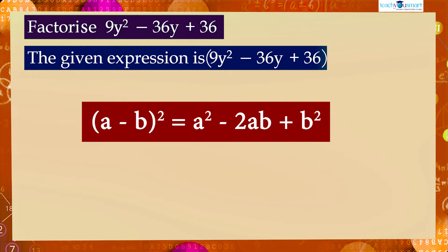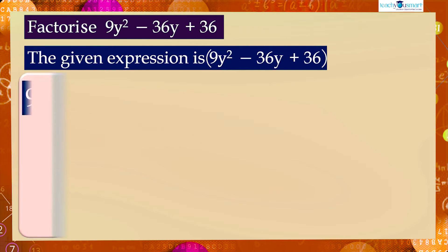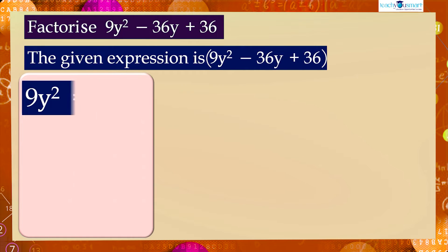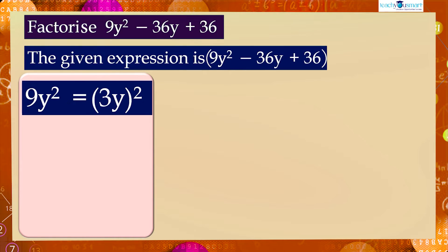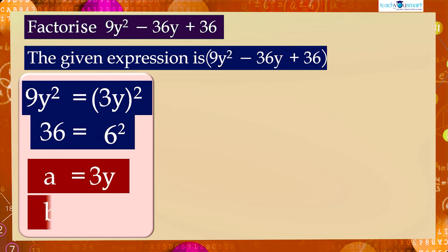First, we have to find the value of a and b from the given expression. We can write 9y squared as (3y) whole square, and 36 as 6 squared. That is, a equals 3y and b equals 6.